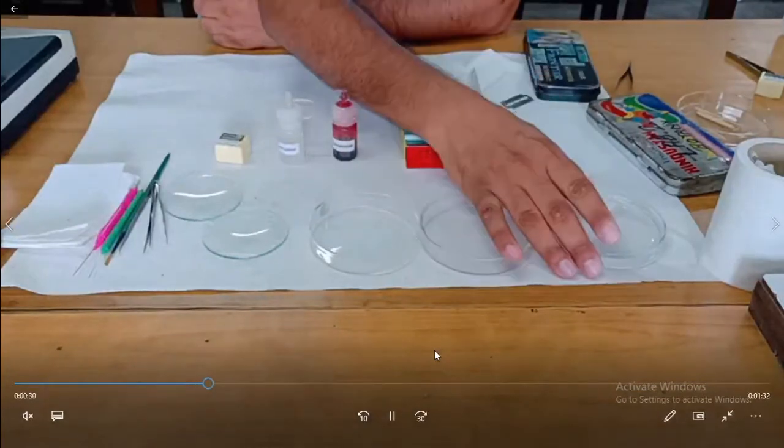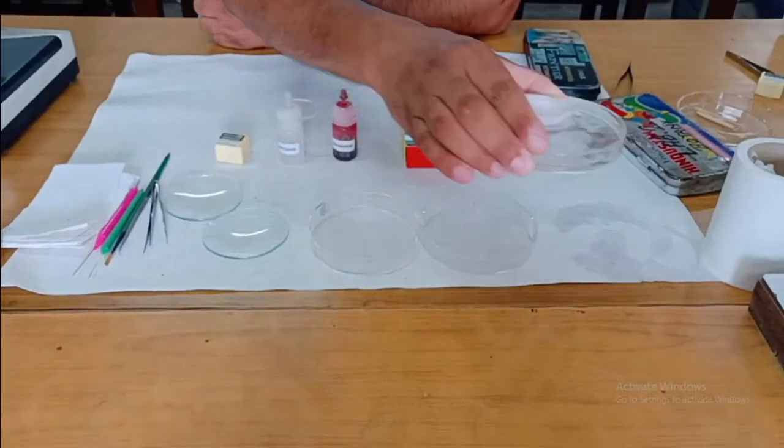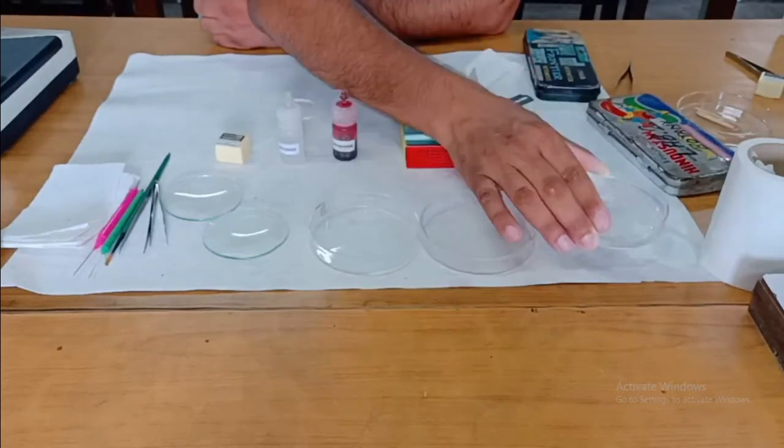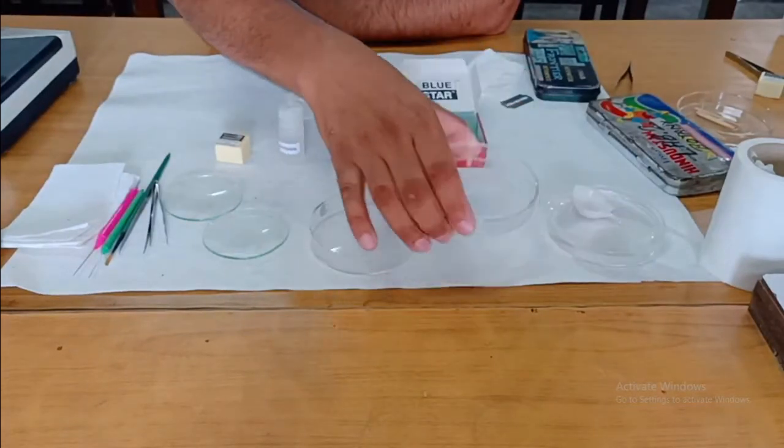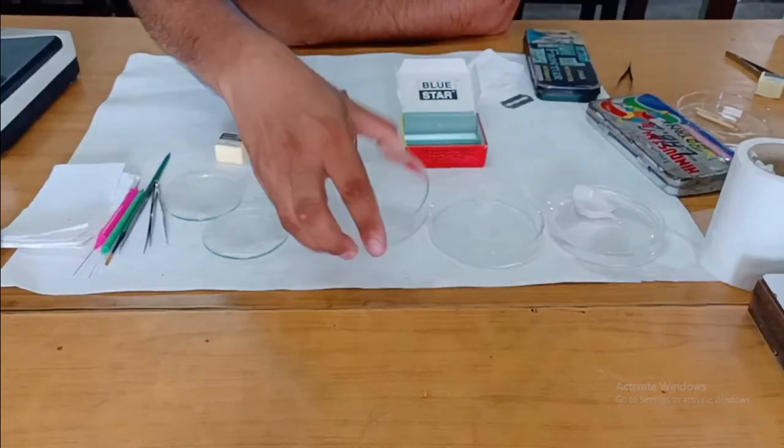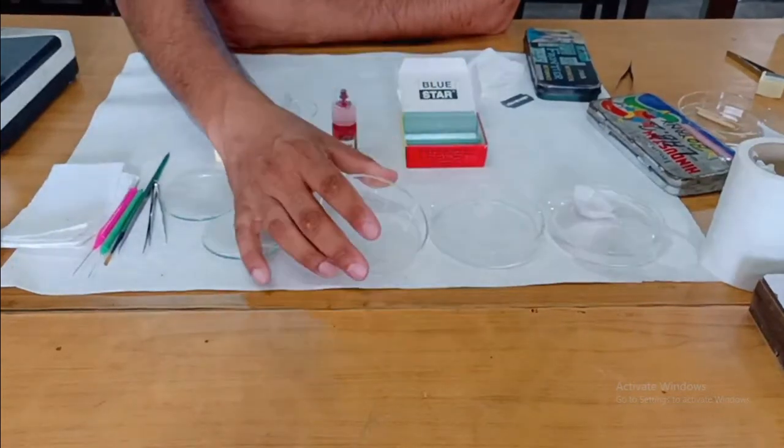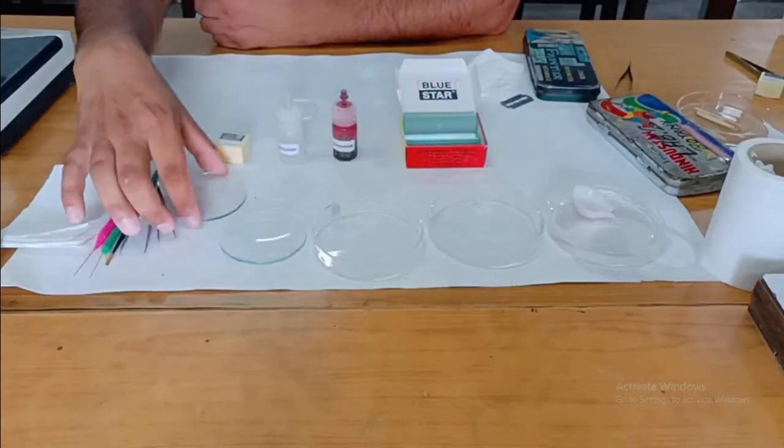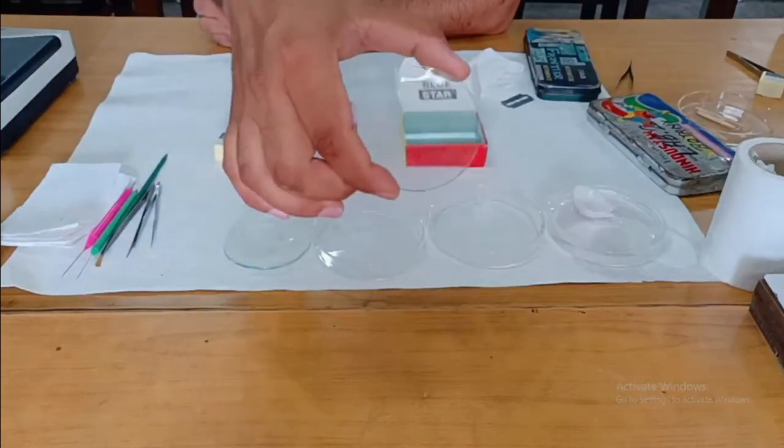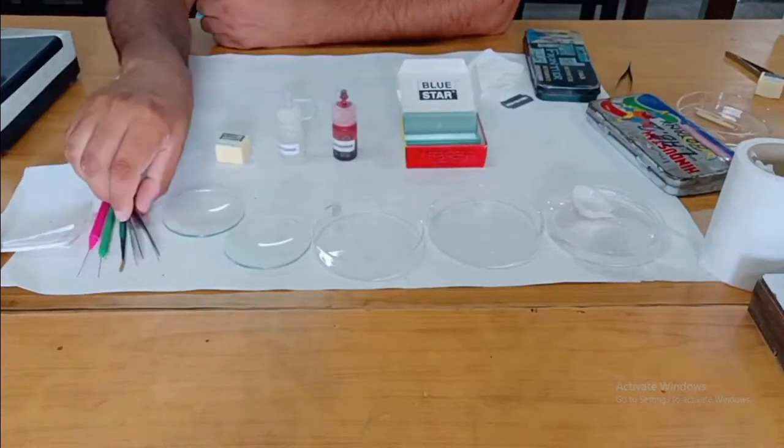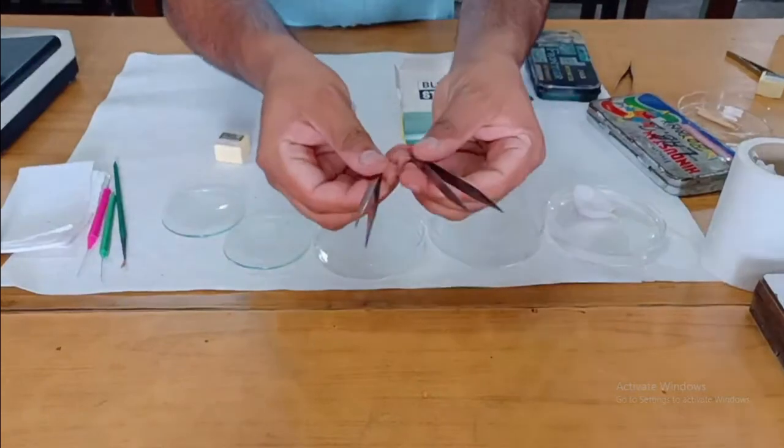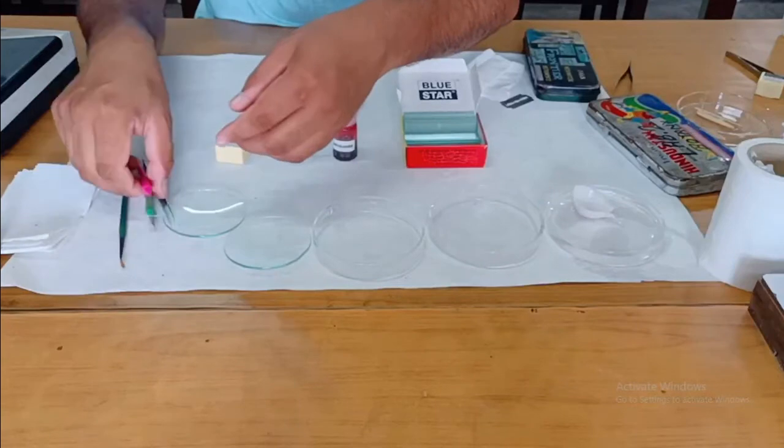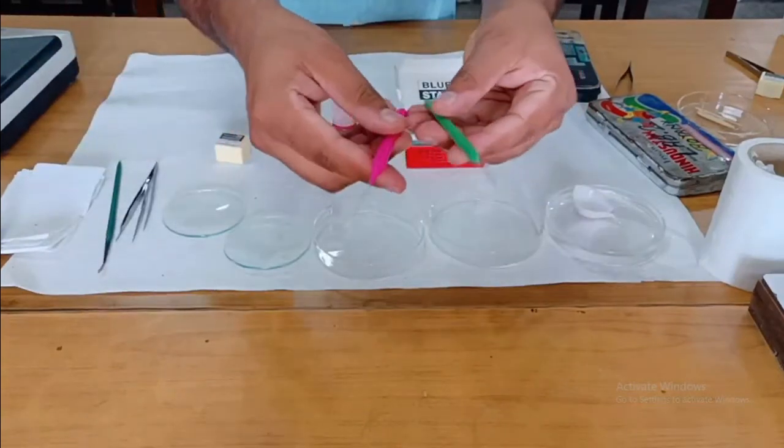In this experiment, the most important things which we will require are: onion and a few Petri dishes along with watch glass, forceps, needles, brush, blotting seeds, and tissue paper.